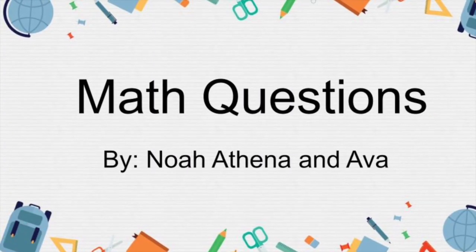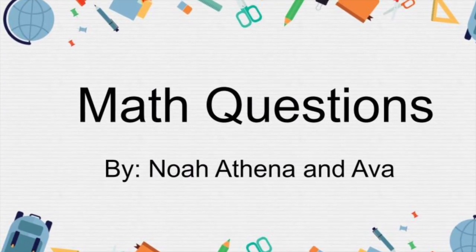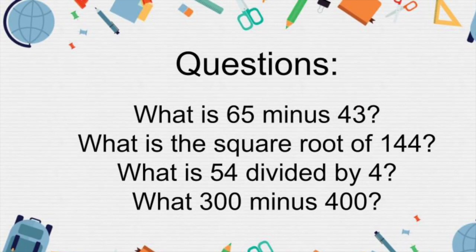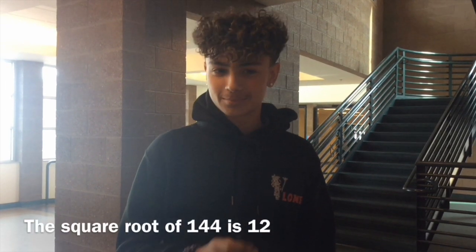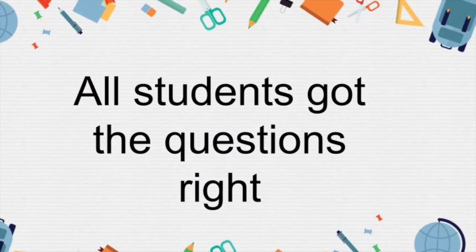Math questions by Noah, Athena, and Ava. What is 65 minus 43? What is the square root of 144? What is 54 divided by 4? And what is 300 minus 400? Answers: 65 minus 43 is 42. The square root of 144 is 12. 54 divided by 4 is 13.5. And 300 minus 400 is negative 100. All students got the questions right.